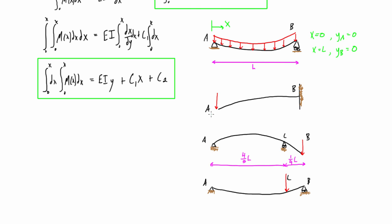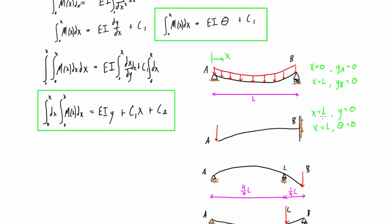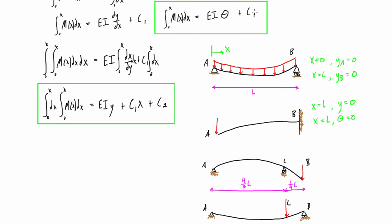In the case of the cantilever with a point load, the boundary conditions we can work with are: at x equals L, the displacement y at B is equal to 0. And also at x equals L, the slope theta is equal to 0, because it's a fixed connection — we assume it doesn't deform right at the connection. So we plug x equals L and y equals 0 into the y-expression to find one constant, and then set x equals L with theta equal to 0 in the slope expression to find C1. That gives us actual expressions with no unknown integration constants.